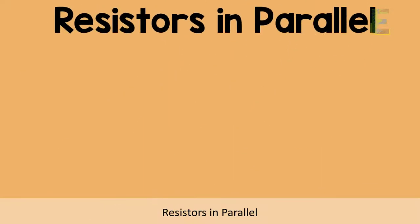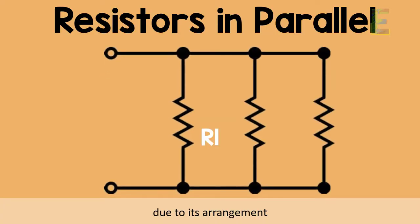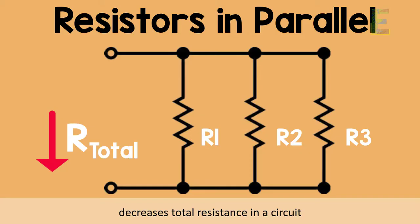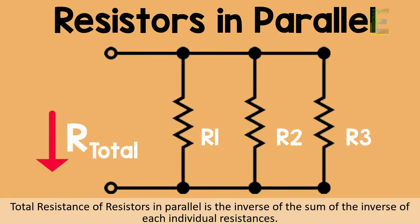Resistors in parallel, due to its arrangement, decreases total resistance in a circuit. Total resistance of resistors in parallel is the inverse of the sum of the inverse of each individual resistances.